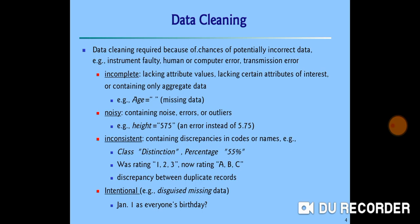Second is noisy data. Contains noise, errors or outliers. Example is suppose in height, height of human, it is written as 575. An error instead of 5.75 means instead of writing decimal, the entry is written as 575. It is known as outlier or noise. Or there may be inconsistent data, which data contains discrepancies or variations in codes or name. Example, suppose we are having two attributes, class and percentage. In class, it is written as distinction but in percentage, it is written as 55. Both these values are not matching. It is called as inconsistent data.